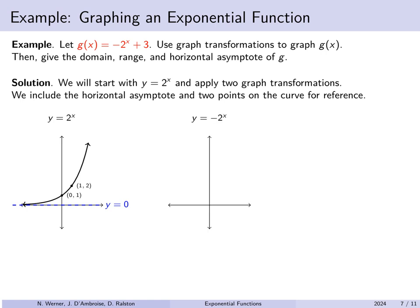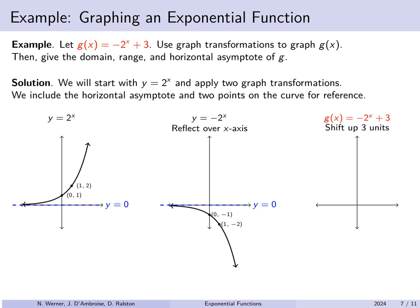Next, multiply everything by negative 1 — a vertical flip, reflecting across the x-axis. The points become (0, −1) and (1, −2), and the horizontal asymptote y equals 0 stays at y equals 0. Now we add 3 to everything, shifting the graph up vertically. The horizontal asymptote shifts up to y equals 3. The point (0, −1) moves up to (0, 2), and (1, −2) shifts up to (1, 1). The graph is the previous curve shifted up 3 units.